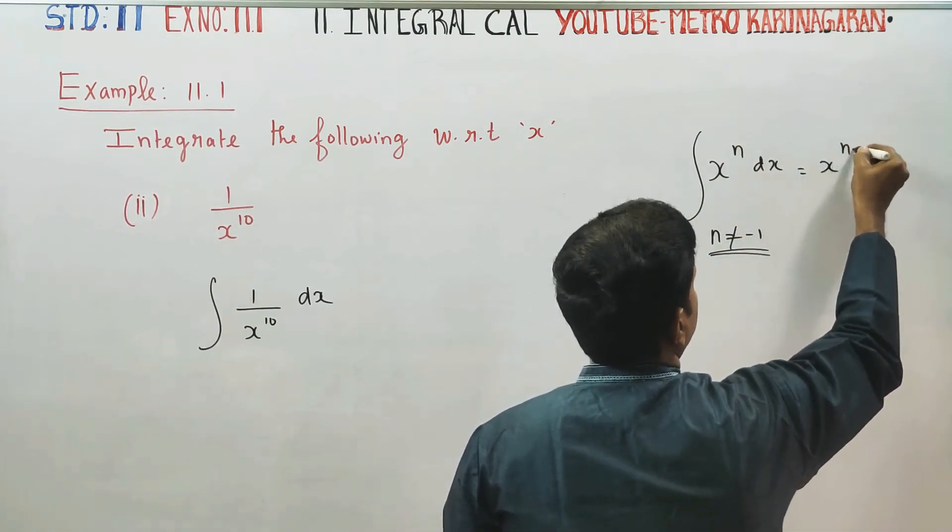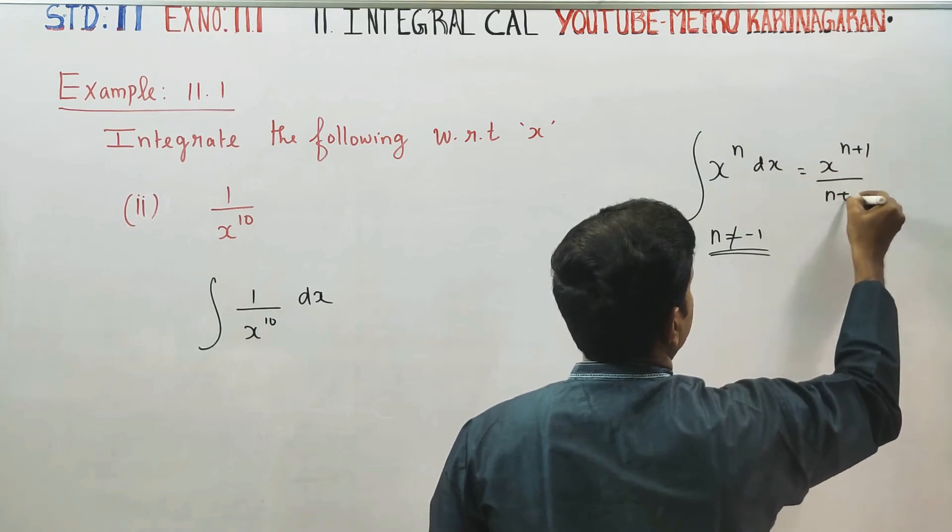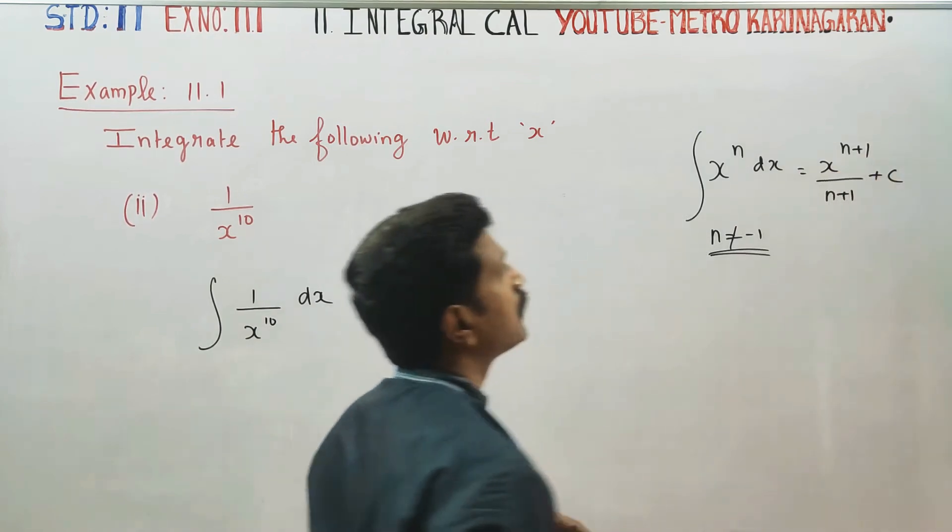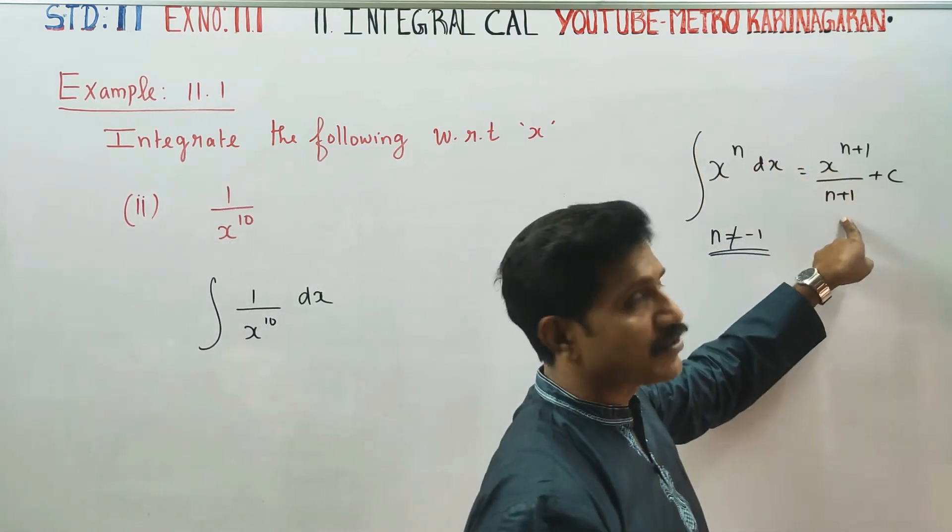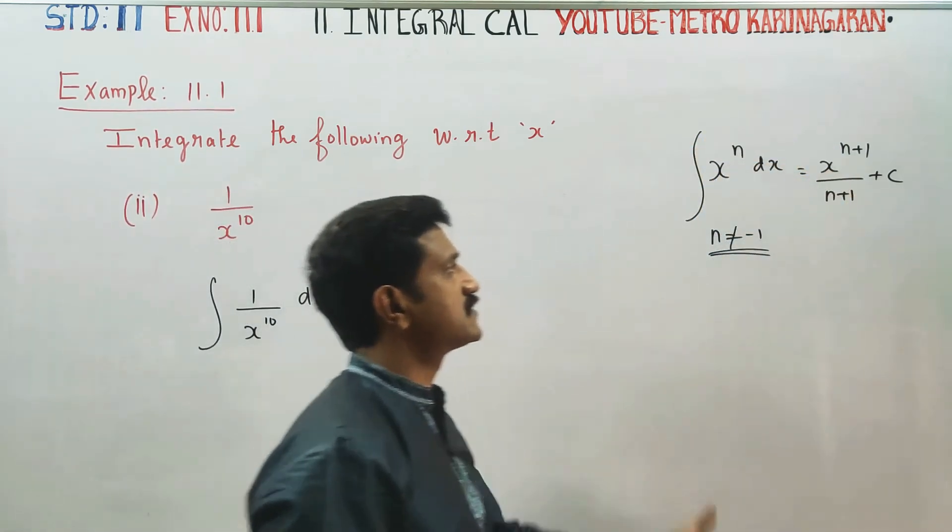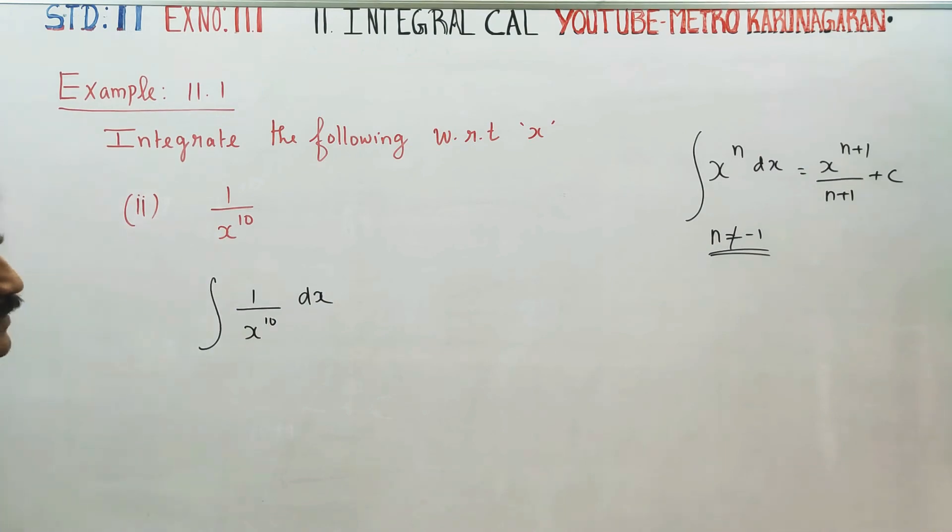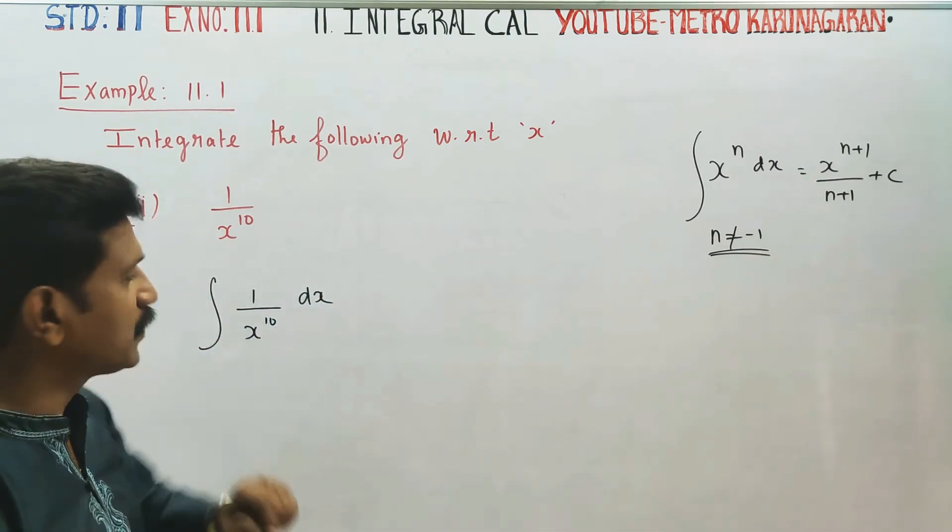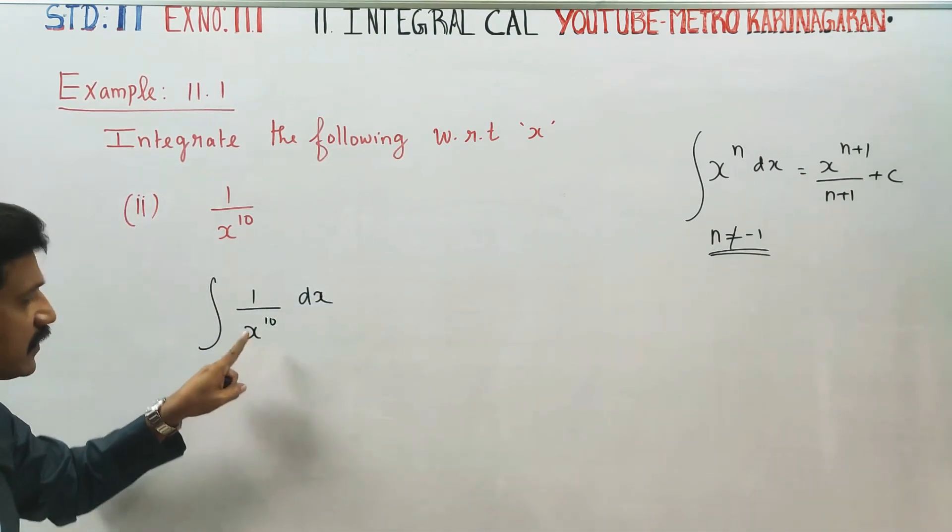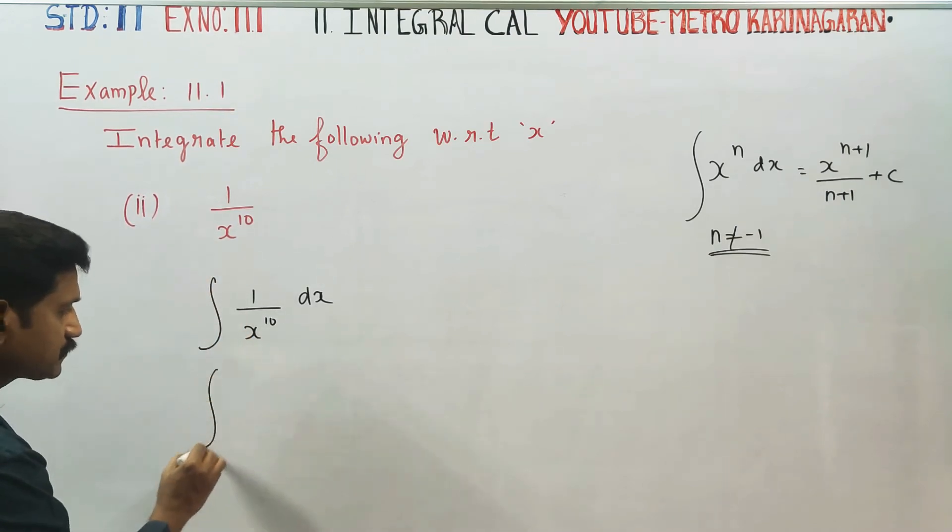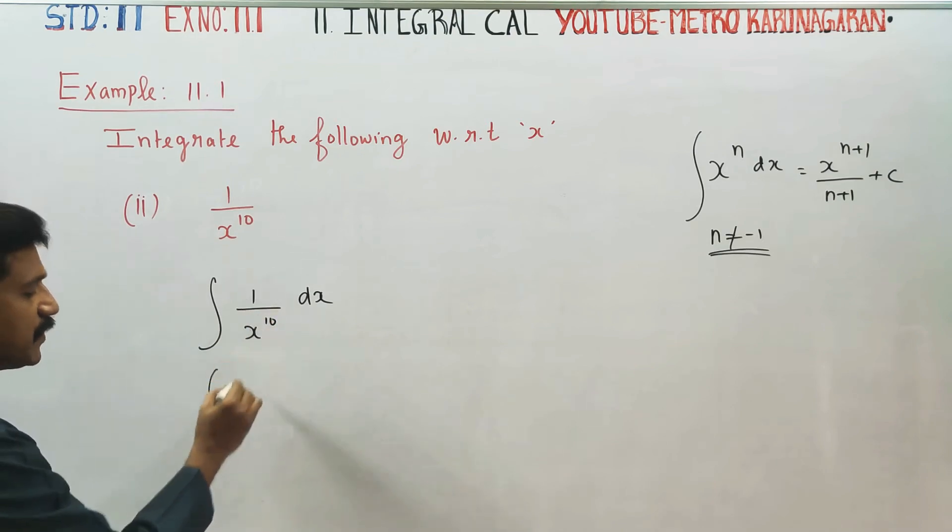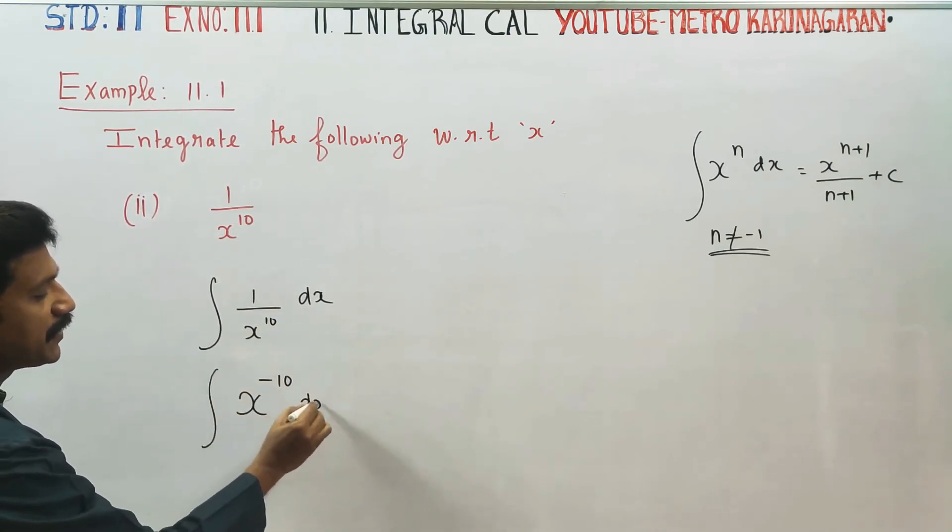This is the formula for integration of x power n. But here x is in the denominator with power 10, so we write it as x power minus 10.